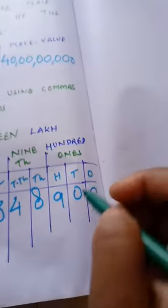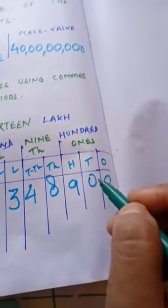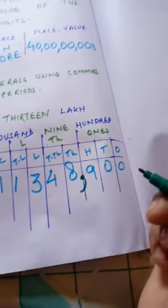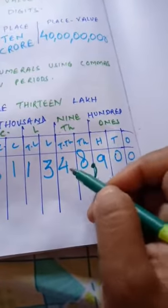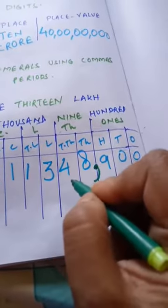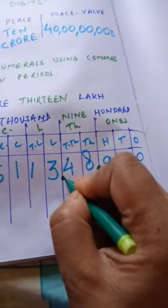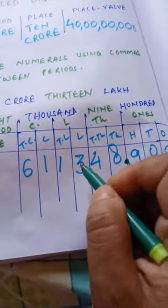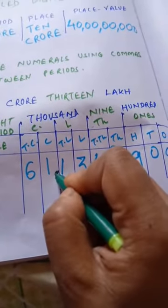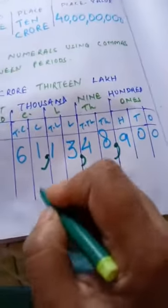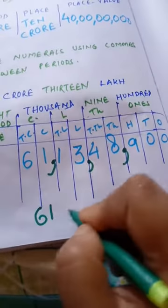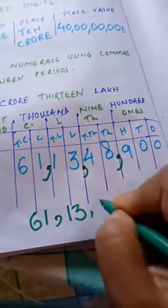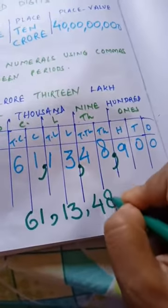Now let us insert the comma. How will we insert the comma? We will start from first period: ones, tens, hundreds makes a period. So after completion of period, I will insert the comma. And then thousands, ten thousands - thousands period is completed. So after this thousands period, I will insert the comma. Lakh and ten lakh - this lakh period is completed. So here after this lakh period, I will insert the comma. So in this way, I will write 61 crore, 13 lakh, 48,900.